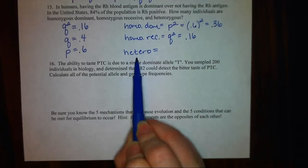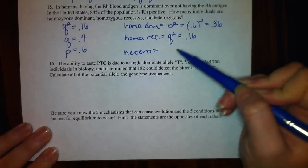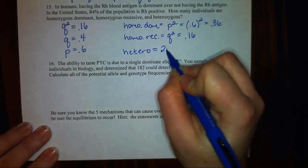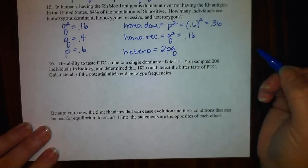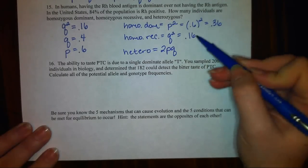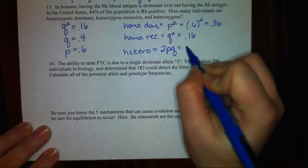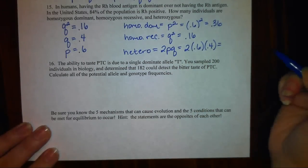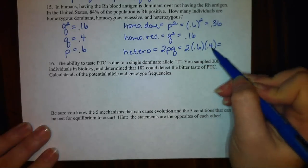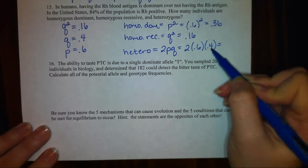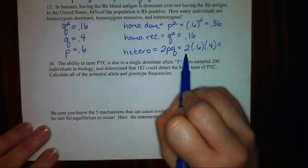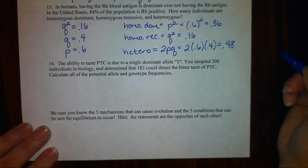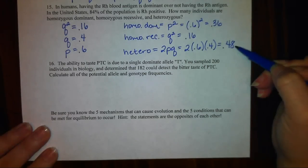Now, to solve for my last category, I can either think of these three categories need to add up to 1. P squared plus Q squared plus 2PQ add up to 1. So I can take 1 minus these two groups, or I can take 2 times P times Q and solve for my last category. So I think 6 times 4 is 24. So 0.6 times 0.4 is 0.24. Double that or multiply by 2. So I have my last category is 0.48. That means that 48% of the population is heterozygous.